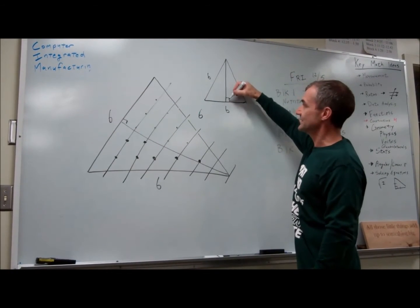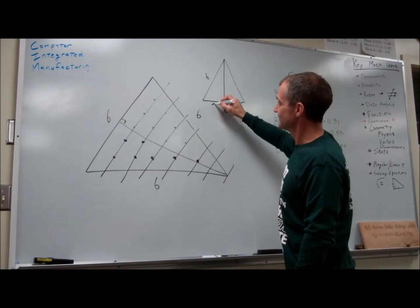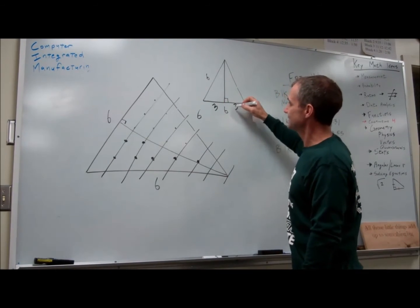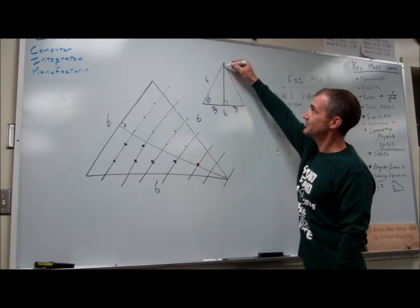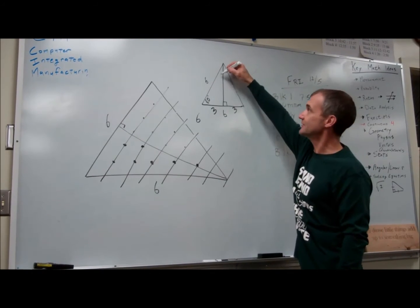This altitude is also the median. It splits this in half. So this is three and three. Every angle in an equilateral triangle is 60. So that's 60. This bisects that 60 degree angle into 30 and 30.